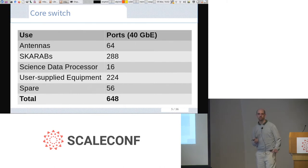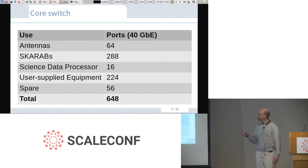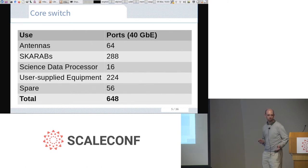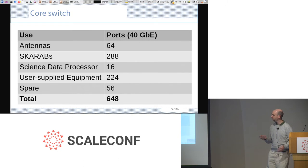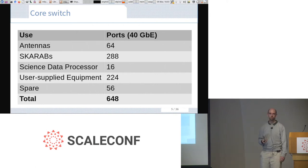The Scarabs are the FPGAs that do very high-speed data processing. The science data processor doesn't need as many ports because we've already reduced the data a lot. There's also user-supplied equipment — other projects bring in their own servers and connect to our network to consume our data. One example is Breakthrough Listen, which you probably know as SETI. So this is quite a big network — you're probably wondering what sort of switch has 684 ports.